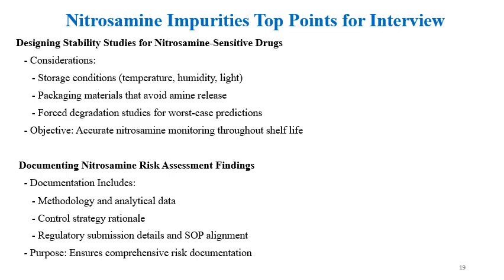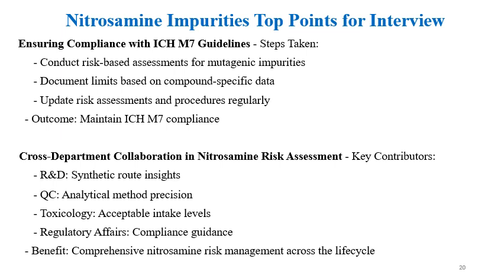Documentation of nitrosamine risk assessment findings should include methodology and analytical data, control strategy rationale, and regulatory submission details. SOPs should be prepared for alignment. To ensure compliance with ICH M7 guidelines, the steps are: conduct a risk-based assessment for mutagenic impurities, document limits based on compound-specific data, and update risk assessments and procedures regularly.